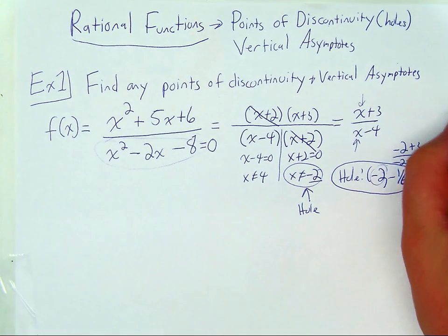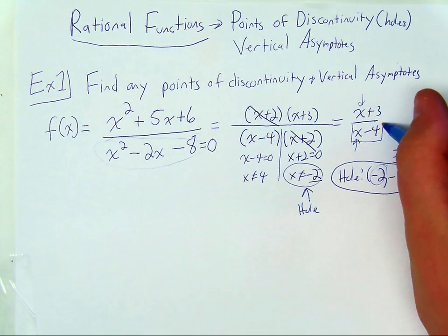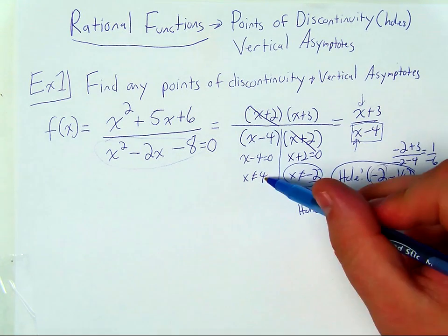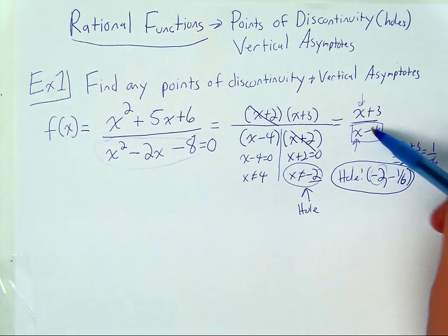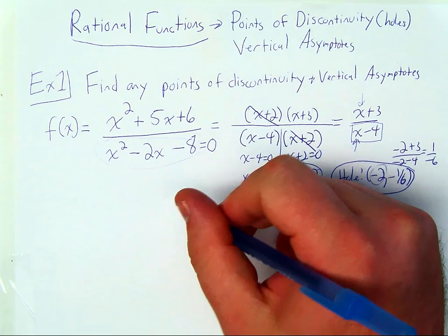Now you can see that x minus four is still in the denominator. So substituting in four is still an issue for us. So any domain restrictions that still exist will then become a vertical asymptote.